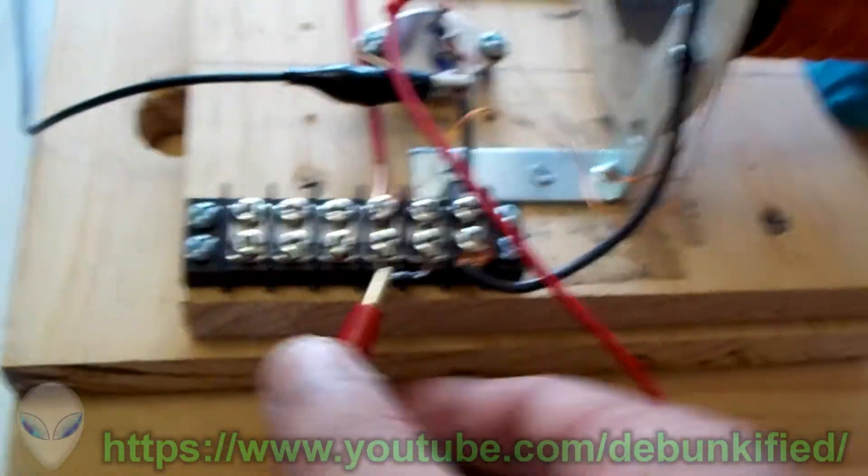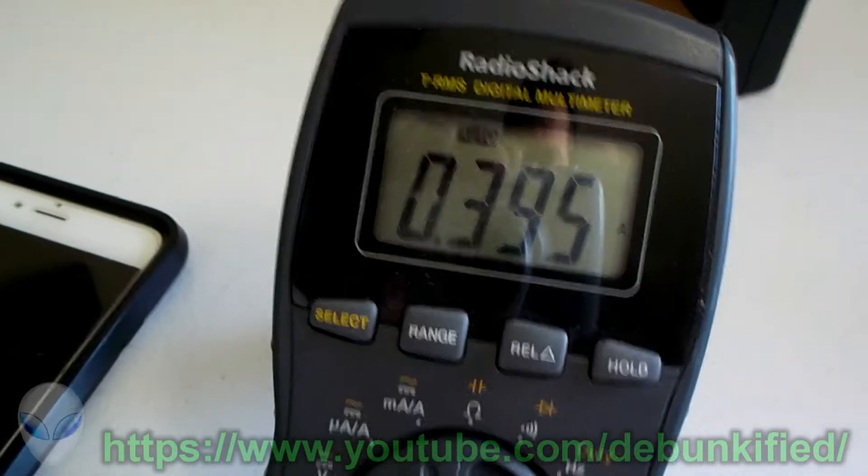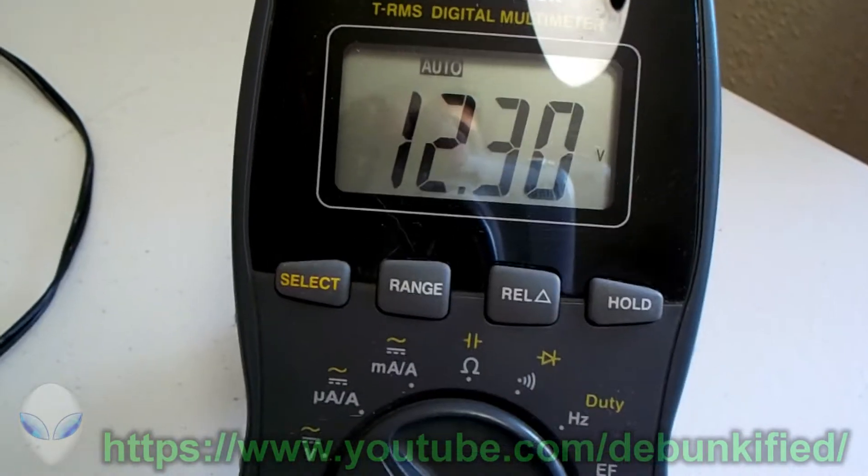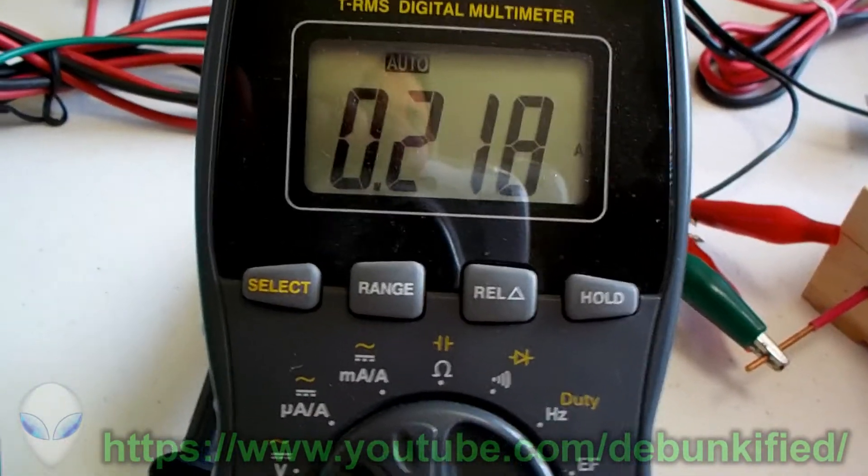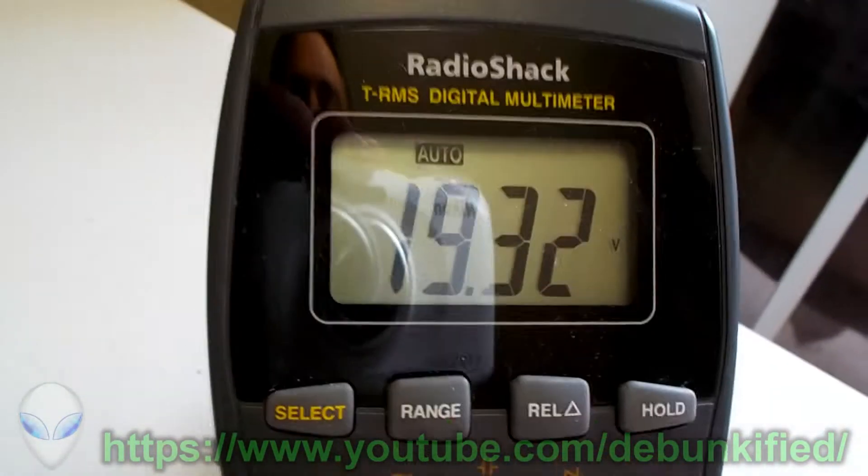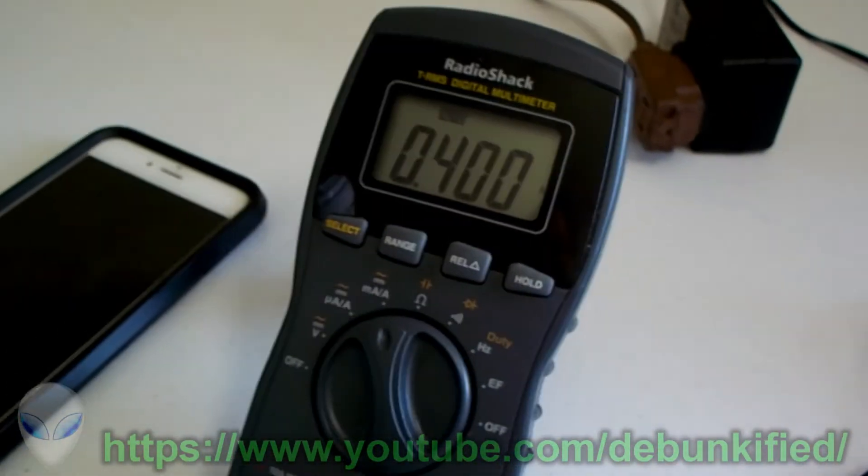We got 0.170 amps going in at 12.32 volts and 0.146 amps coming out in current at 19.32 volts. And now let's take the return off and now let's look at it. Now we got 0.395 amps at 12.30 volts going in and 0.218 amps coming out at 19.32 volts.